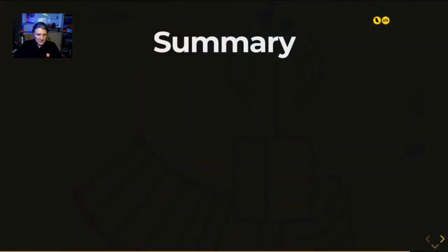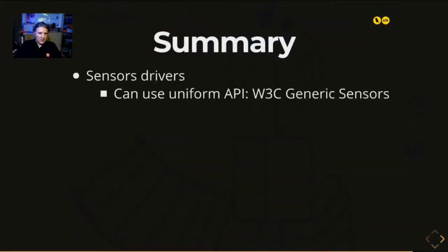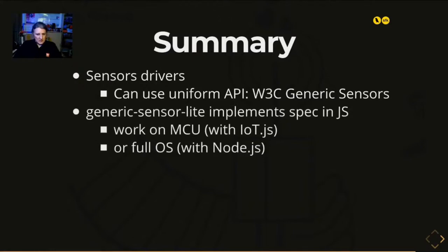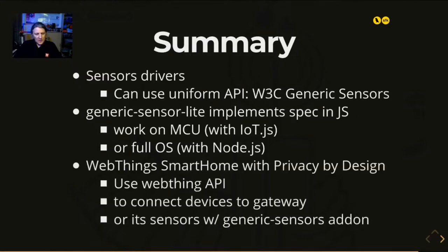Summary: sensor drivers can use a uniform API like the W3C Generic Sensor. The generic-sensor-lite implements this specification in JavaScript and can work on microcontrollers using IoT.js runtime, or a full-featured OS like Linux using Node.js. You can then create Web Things applications using the WebThings gateway, connect all devices together, and put sensors on the gateway itself with the generic sensor add-on.